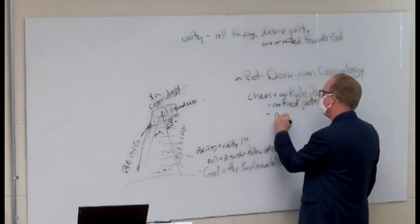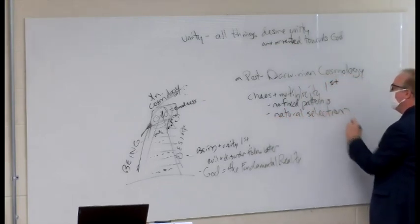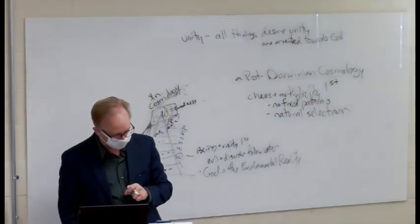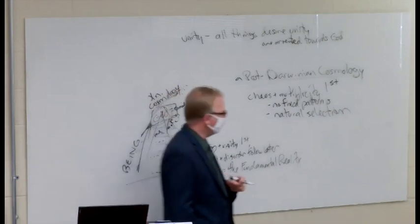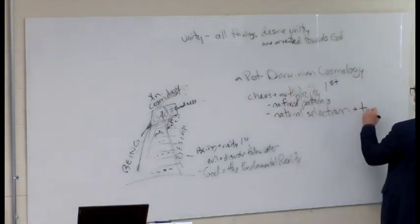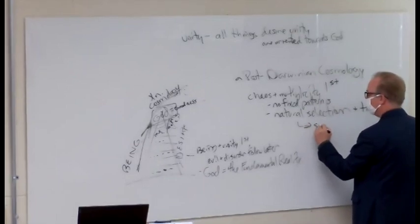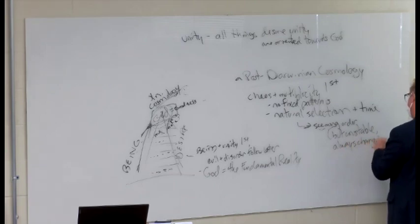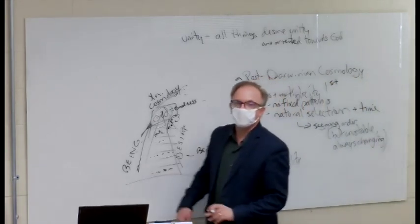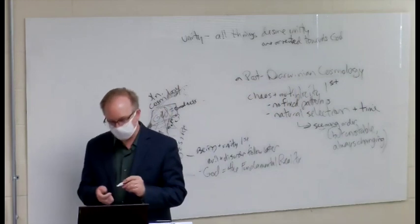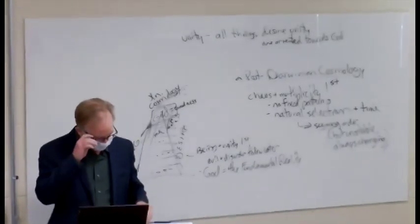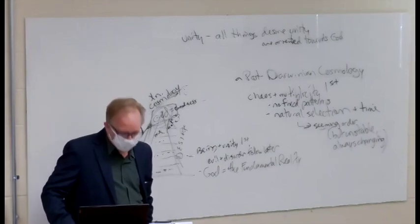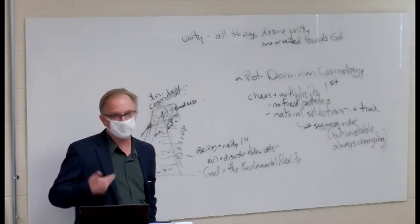What we do have, though, is the process of natural selection over deep time, as one advocate expresses it. Natural selection plus time produces a seeming order. Things seem to be orderly. They seem to be arranged in a certain fashion. Goes this post-Darwinian world picture. But it's only a semblance of order because it is unstable and constantly changing.